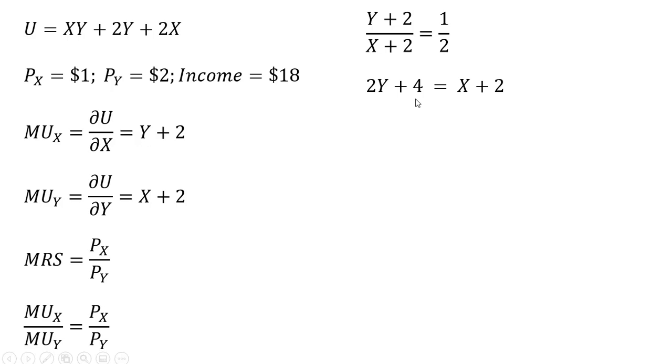Now we're just going to solve this for X, subtracting 2 from both sides. Let's form the budget constraint. Income equals the price of good X times units of good X plus the price of good Y times units of good Y. Substituting in $18 for M, $1 for price of good X, and $2 for the price of good Y, we have the budget constraint.